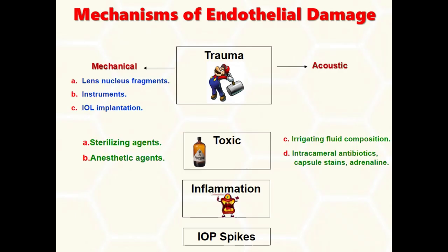Mechanisms of endothelial cell damage: though collateral tissue damage from ultrasonic energy is blamed to be a major cause of endothelial cell loss, mechanical injury from lens fragments and fluid turbulence in the anterior chamber are also significant causes. Additionally, inappropriate treatment of post-operative inflammation and intraocular pressure spikes aggravates the cell damage.